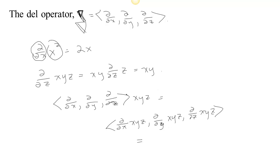It's like multiplication, only it's operation. A vector of operators operating on a scalar-valued function means each component operates on that same scalar-valued function, just like when a vector multiplies a scalar, the scalar gets multiplied by each component. So we get outputs yz, xz, and xy.